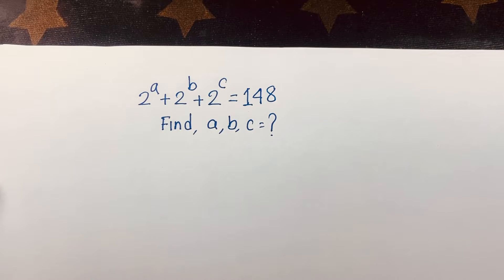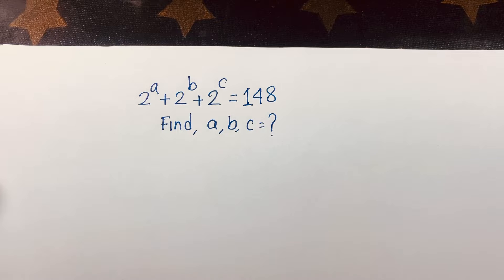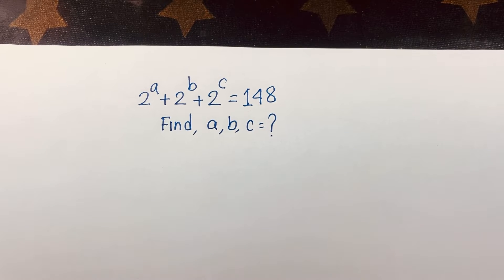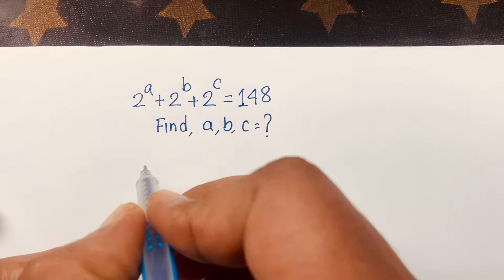Hello everyone. In this video we solve this math olympiad question. The question is: 2 to the power a plus 2 to the power b plus 2 to the power c is equal to 148, and we'll find out what is the value of a, b, and c.